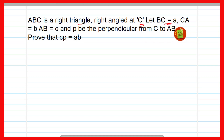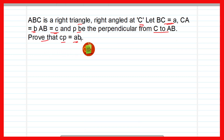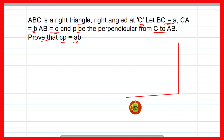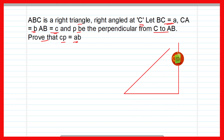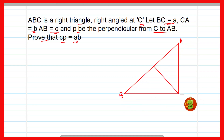Now move to the next question. ABC is a right angle triangle right angled at C. Let BC = a, CA = b, AB = c, and P is the perpendicular from C to AB. Prove that CP = ab/c. Here ABC is a right angle triangle. I draw the right angle triangle here with the perpendicular from vertex C to AB.